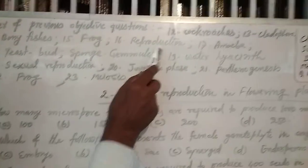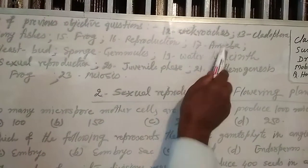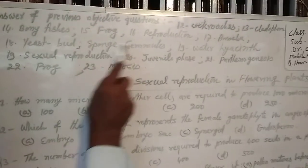16: Reproduction. 17: Amoeba. 18: Yeast, Bud, Sponge, Gamules.